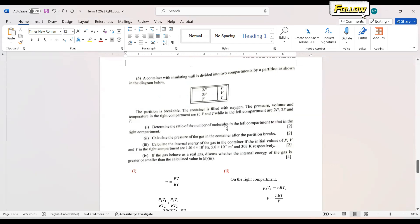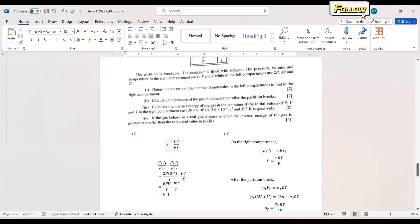Determine the ratio of the number of molecules in the left compartment to that in the right compartment. We should assume it behaves as an ideal gas. So we have the formula PV equals NRT. The number of molecules will be equal to PV over RT. Use this formula to obtain the ratio: P1V1 over RT1 to P2V2 over RT2. Put in all the expressions, and you should get the ratio is equal to 6 to 1.